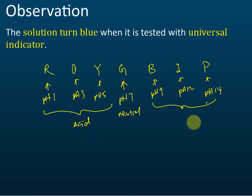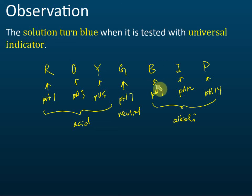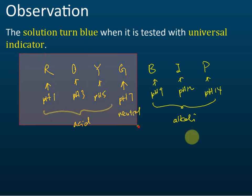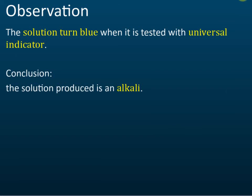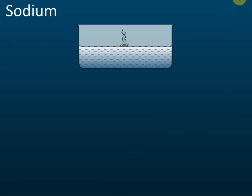The solution turns blue, which means it is around pH 9 to 10. This shows that when group one elements react with water, they produce an alkali. So the conclusion is that the solution produced is an alkali.